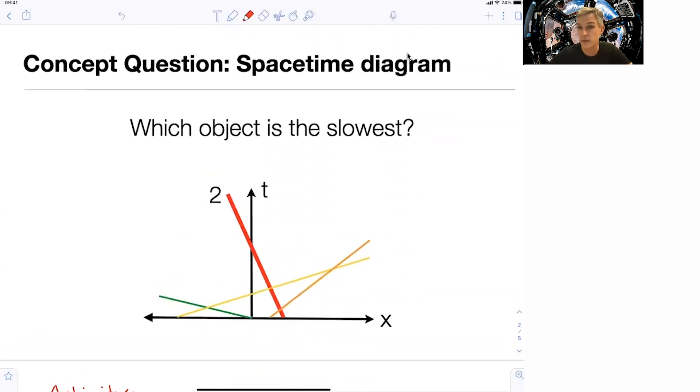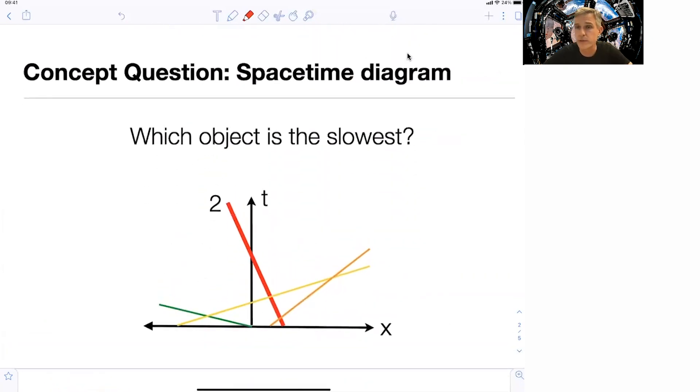As the velocity is 1 over the slope, the object that has the steepest slope, largest value of the slope, is moving the slowest, and in this case, it's object number 2.